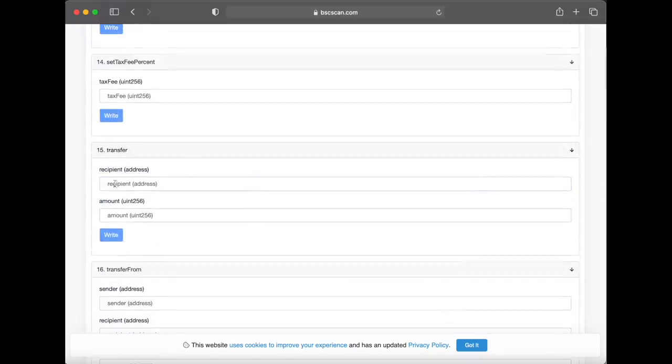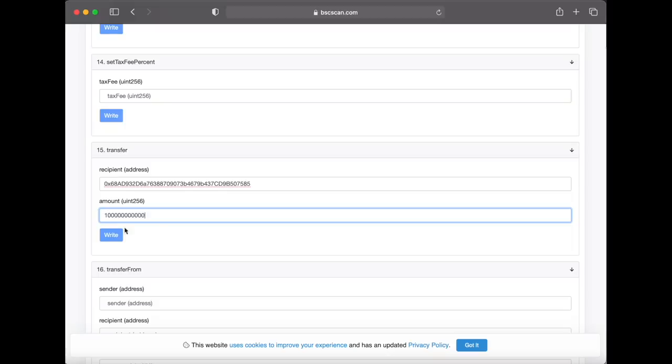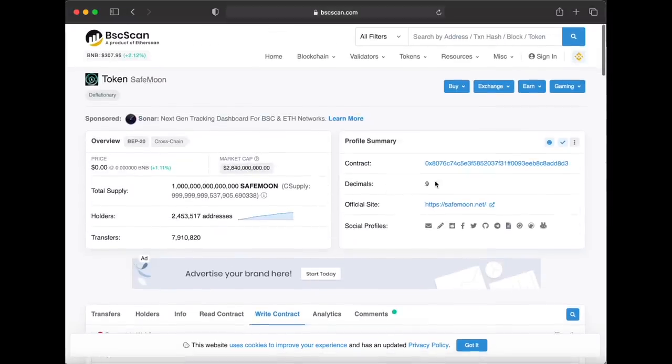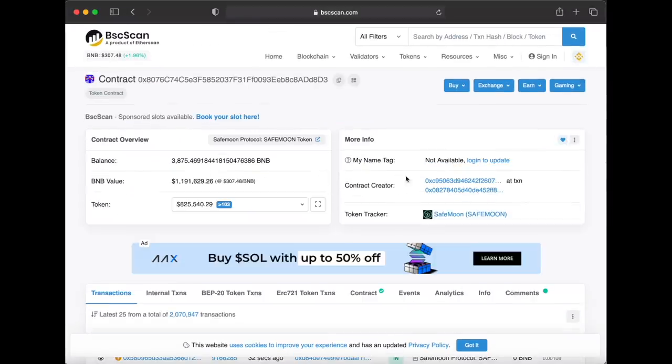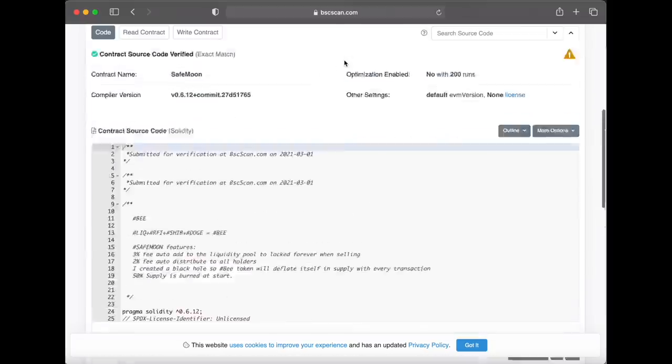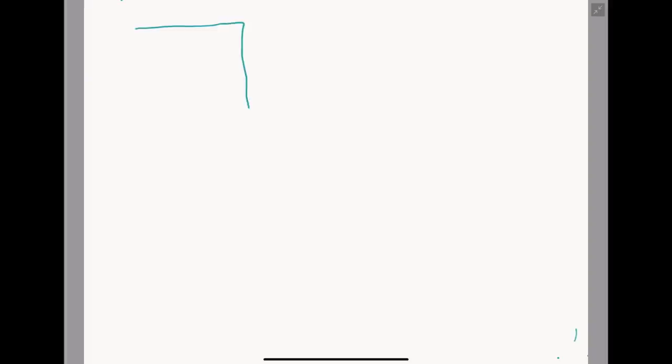PancakeSwap has several smart contracts that allow you to swap different tokens for one another. These smart contracts aren't tokens themselves. They are just code that runs the necessary functions to operate liquidity pools, allow for staking, and of course exchanging different currencies at a fair market value.